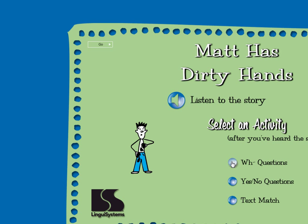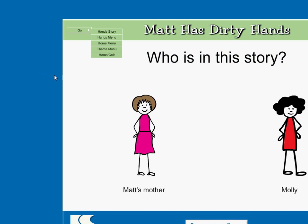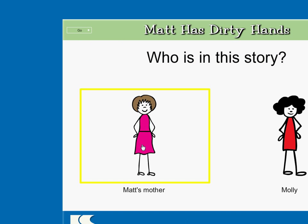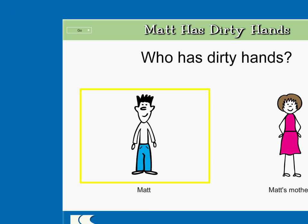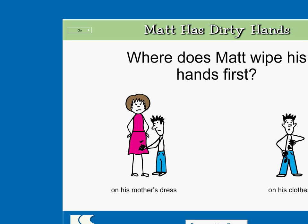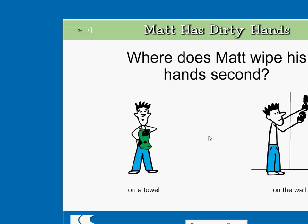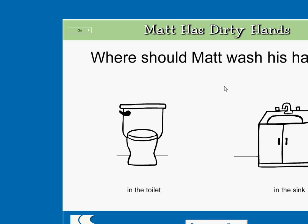Matt has dirty hands. Who is in this story? Matt's mother. Molly. Correct. Who has dirty hands? Matt. Matt's mother. Excellent! Where does Matt wipe his hands first? On his mother's dress. On his clothes. Wow! Where does Matt wipe his hands second? On a towel. On the wall. Wow! Where should Matt wash his hands? In the toilet. In the sink. Wow!